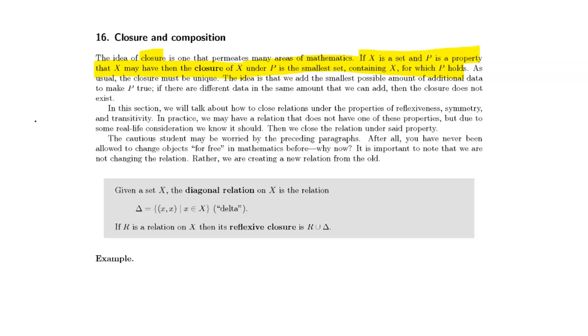So the idea is we have a set X, we have another set, let's call it X star. X doesn't have P, whatever the property P is, and X star has the property P. If X has P already, then X star is just equal to X.